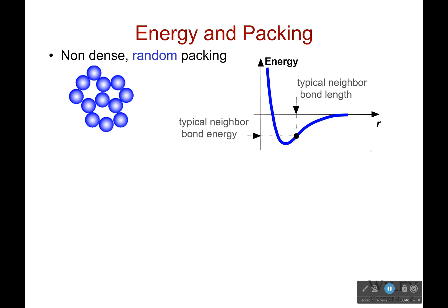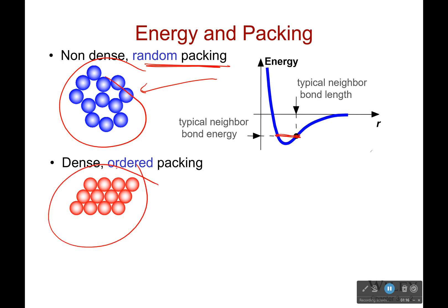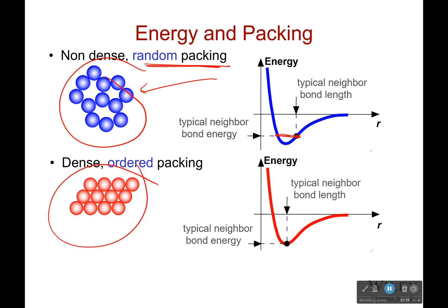What's the difference between crystalline and non-crystalline? In a random packing, it's not very dense, and because we're not as close as we could be, the average bond length is larger than it should be. Because of that, we're not at the lowest energy point, which means that this is just not as stable. It's more willing to break apart. This is kind of how glass looks. Now in dense ordered packing, the typical neighbor bond length is very, very small, and it's actually at that perfect low energy bond length.